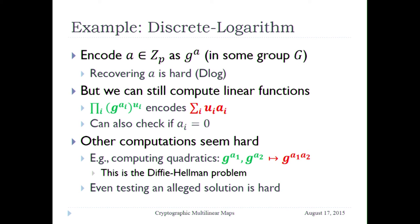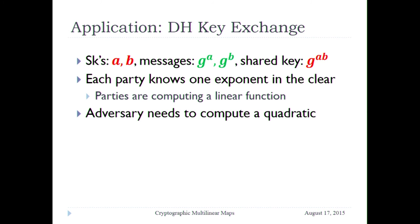Even testing — if somebody gives you an alleged solution — whether that is a real solution, that's still hard. Now that you have this thing where you can compute some things but not others, you can use it for crypto applications. Diffie-Hellman key exchange is perhaps the most obvious example. You have secrets a and b, messages g^a and g^b, and the shared key g^{ab}. The legitimate parties know a or b in the clear, so they need to compute a linear function. An attacker knows g^a and g^b, so the attacker needs to compute a quadratic — which is why it's easy for the legitimate party but hard for the adversary.